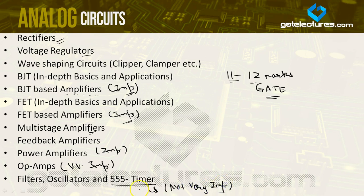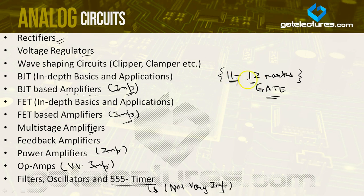Even if you skip the 555 timer topic it won't affect your GATE preparation, as you cannot expect many questions from it. However, the topics I marked as important are seriously very important and you have to cover all of them. You should be well-versed in all concepts. You can expect 11 to 12 marks, or even 13 to 15 marks from this subject.